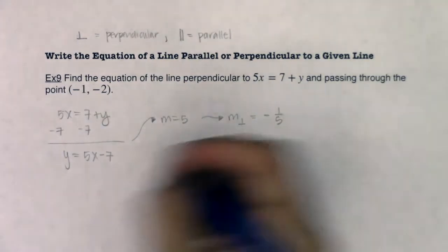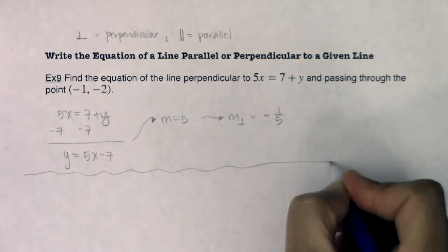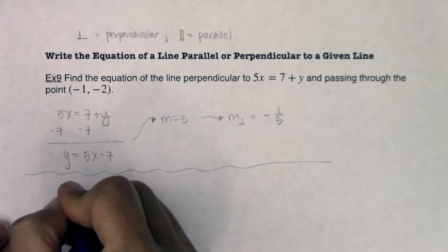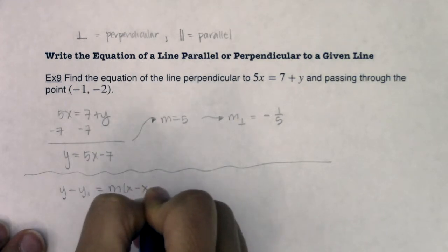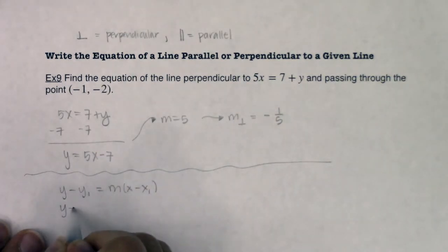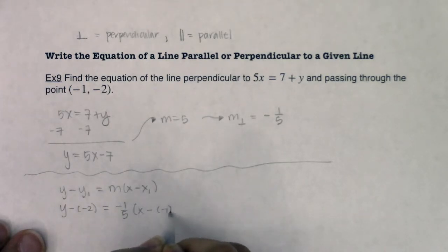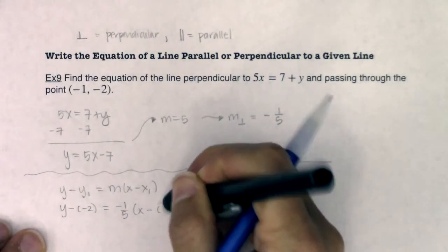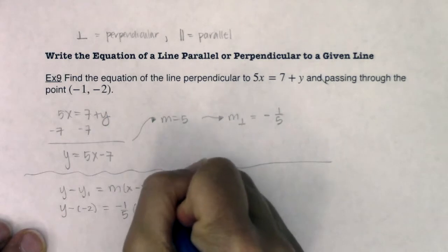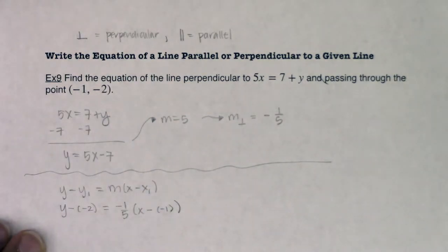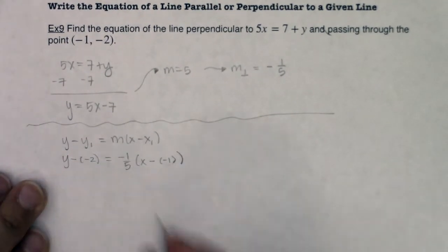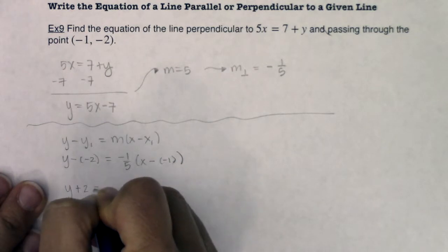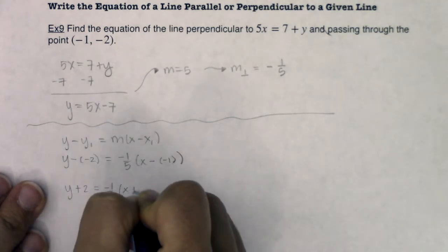So I'm going to just draw a little barrier there, make sure we've got some space. So we have y minus y sub 1 equaling m times x minus x sub 1. So in this case, I have y minus negative 2 equaling negative 1 5th times x minus negative 1. That looks a little weird. Let me erase that. Now I'm going to scooch this up just so I have some more room to do all of this.